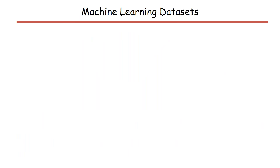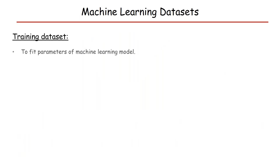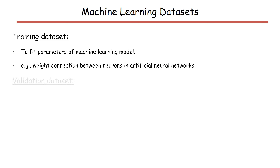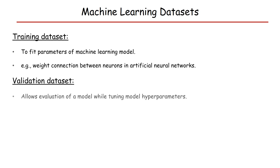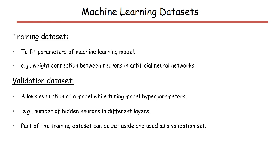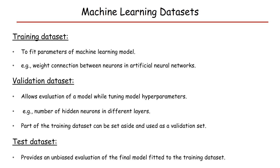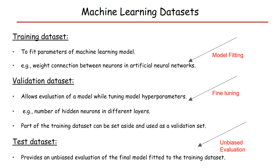Before moving forward, I want to quickly discuss dataset terminologies used in machine learning. The first is the training dataset, which is used to fit parameters of the machine learning model — for example, weight connections between neurons in artificial neural networks. The second is the validation dataset, which allows evaluation of a model while tuning model hyperparameters, such as the number of hidden neurons in different layers. Part of the training dataset can be set aside and used as a validation set. Finally, the test dataset provides an unbiased evaluation of the final model fitted to the training data.